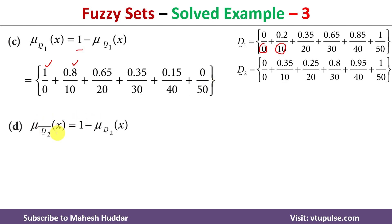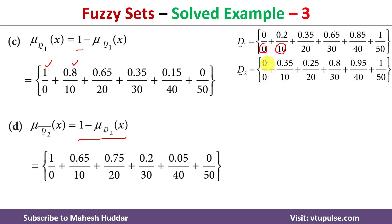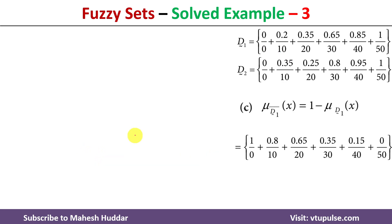For the D2 complement, again we calculate 1 minus the membership value of x in D2. For element 0, 1 minus 0 equals 1. For element 10, 1 minus 0.35 equals 0.65, and so on for the remaining elements.